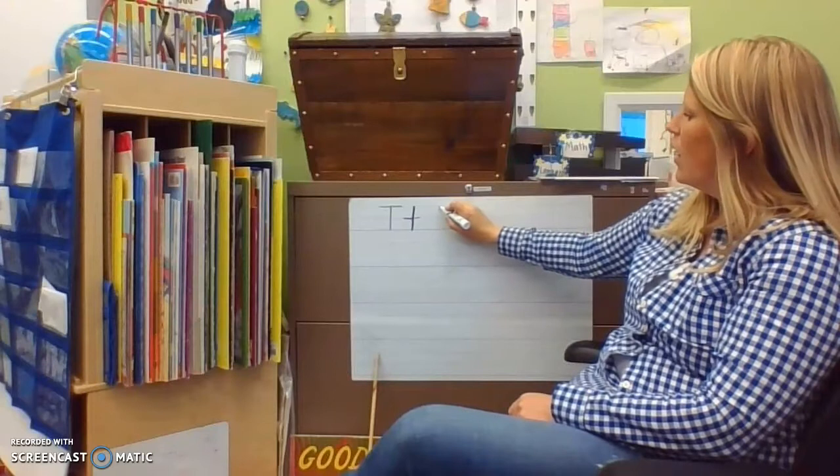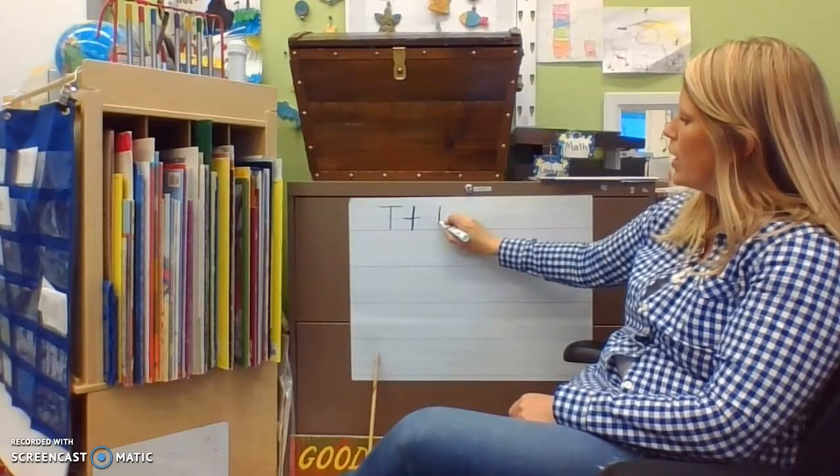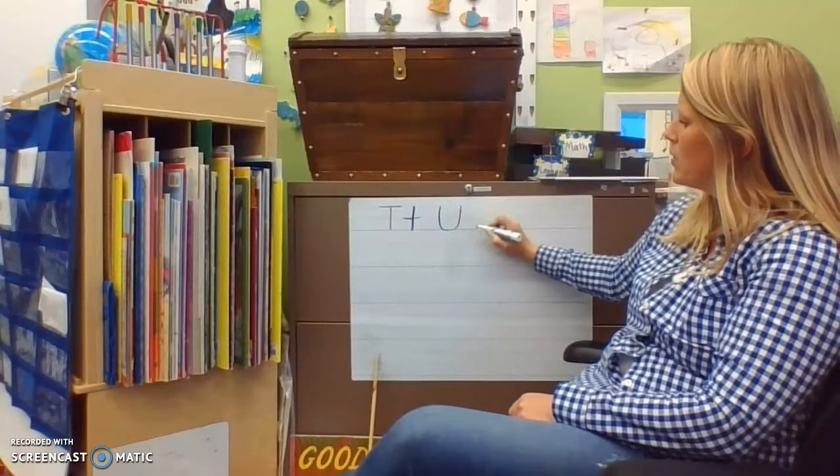For my U, I start at the top. I do a straight line down. I curve around and back all the way up to the top.